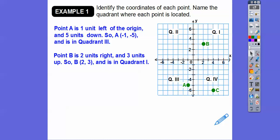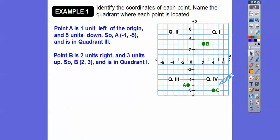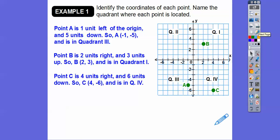And then C is over here in quadrant four. From the origin we always start at the origin — it goes to the right four, that's positive, and it goes down, looks like six, so down six would be negative six. So C is four, negative six, and that's in quadrant four.